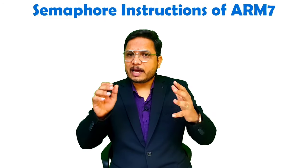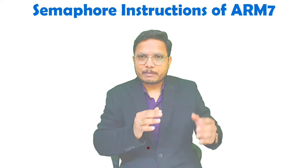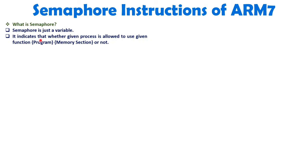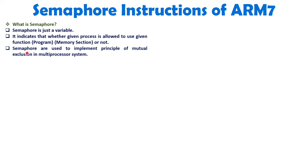Multiple processes cannot execute the same program, same memory, or same function when semaphore is used — this is what happens in a multiprocessor system. Semaphore is used to avoid that clash. Semaphore indicates whether a given process is allowed to use a given function, program, or memory section. Semaphores implement the principle of mutual exclusion and prevent two processors from accessing the same data simultaneously.